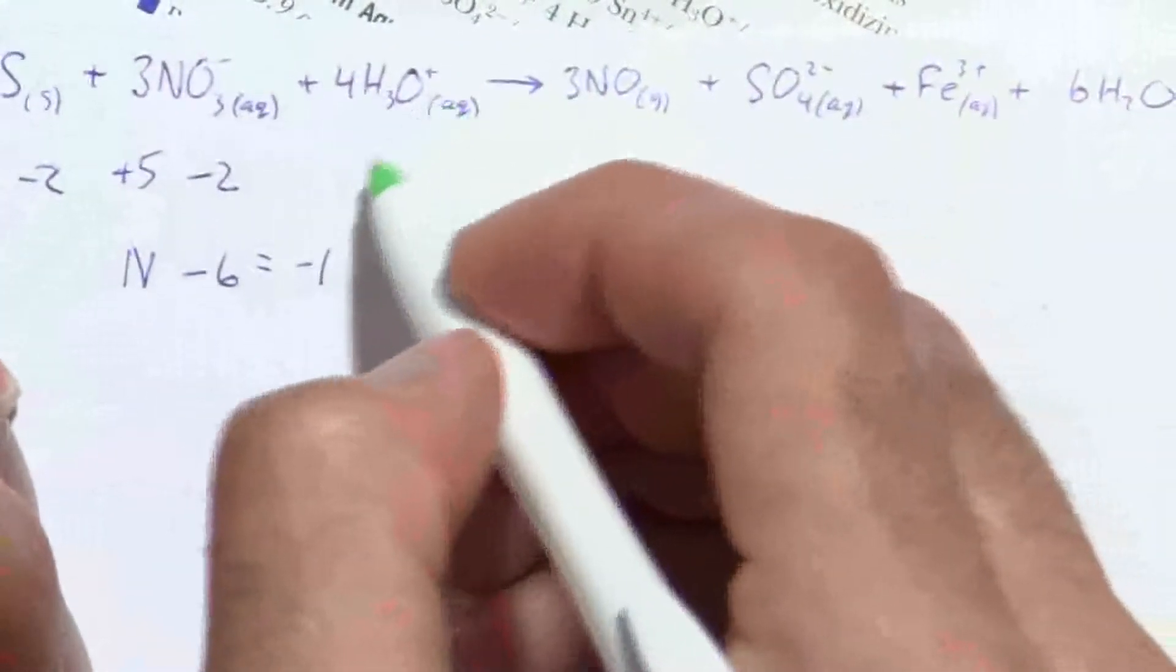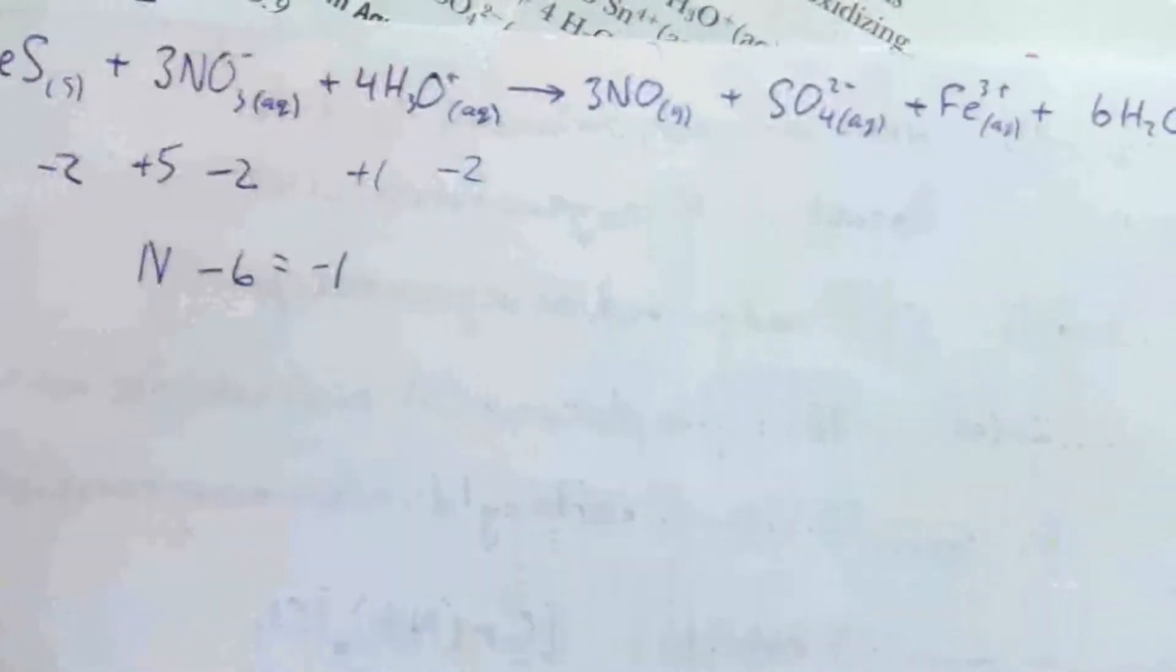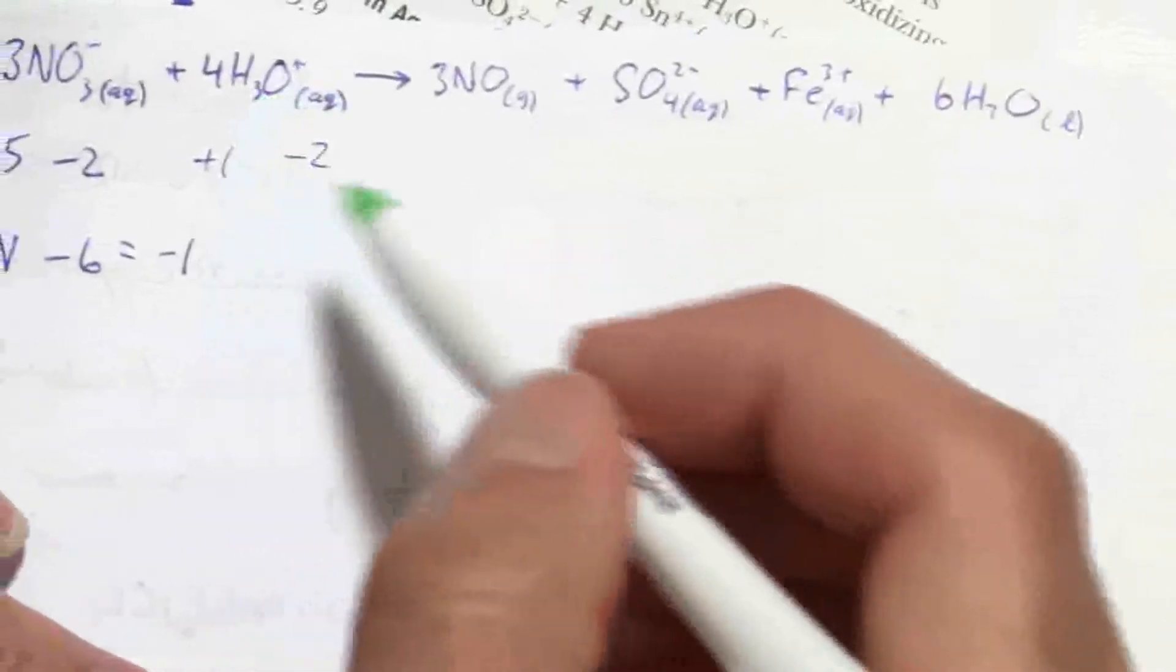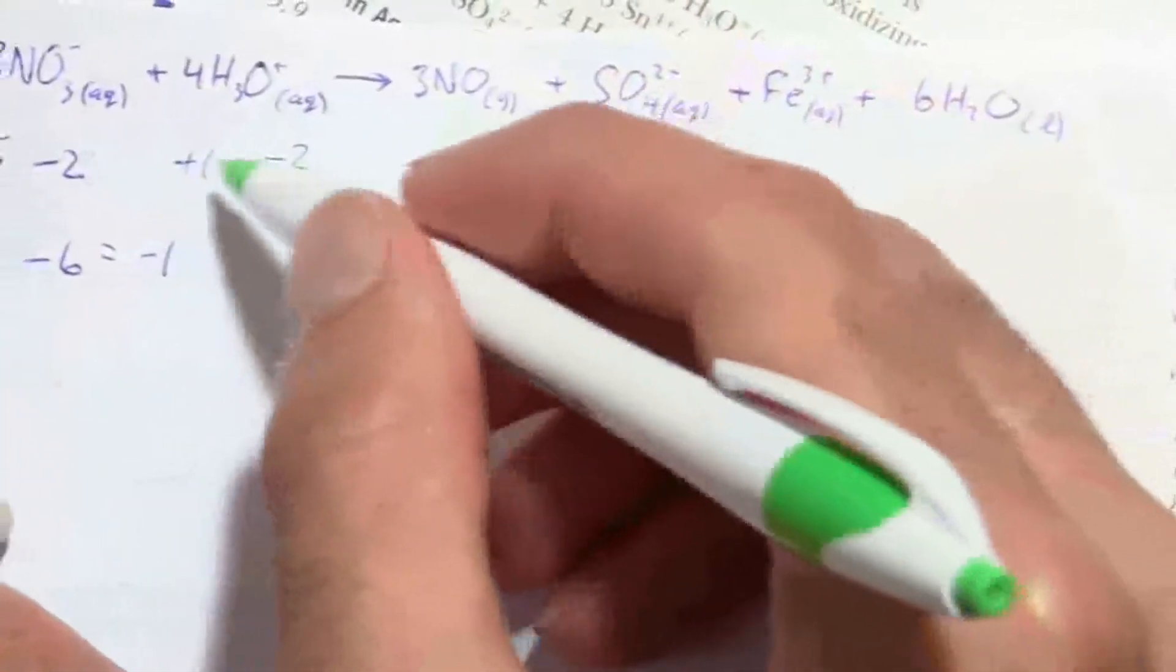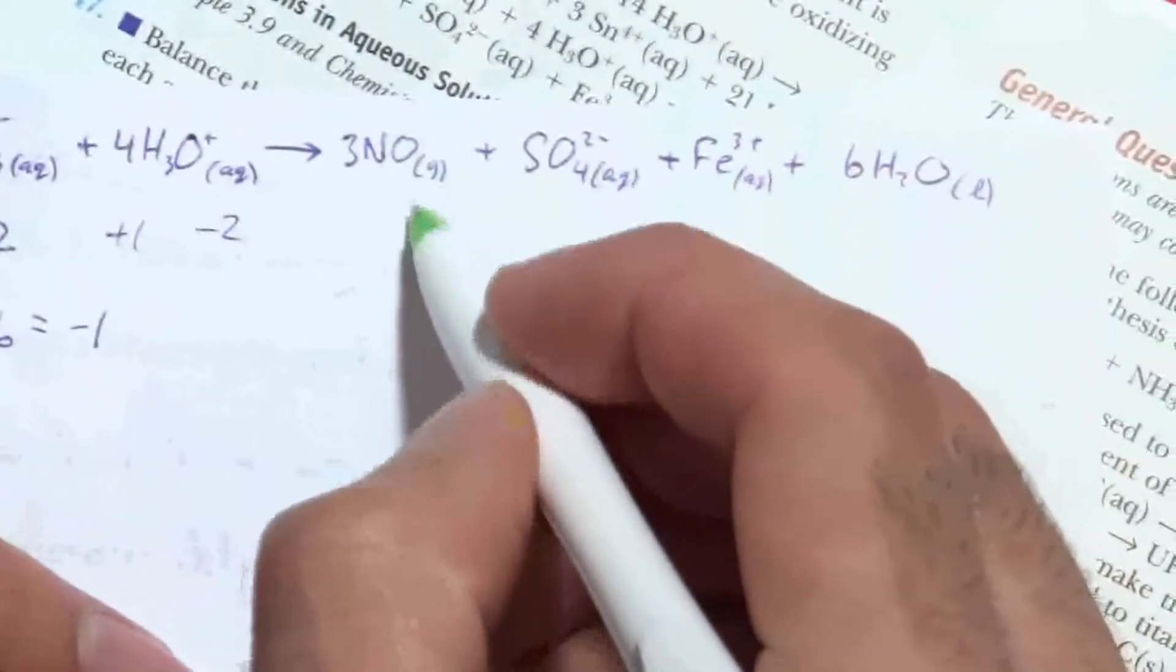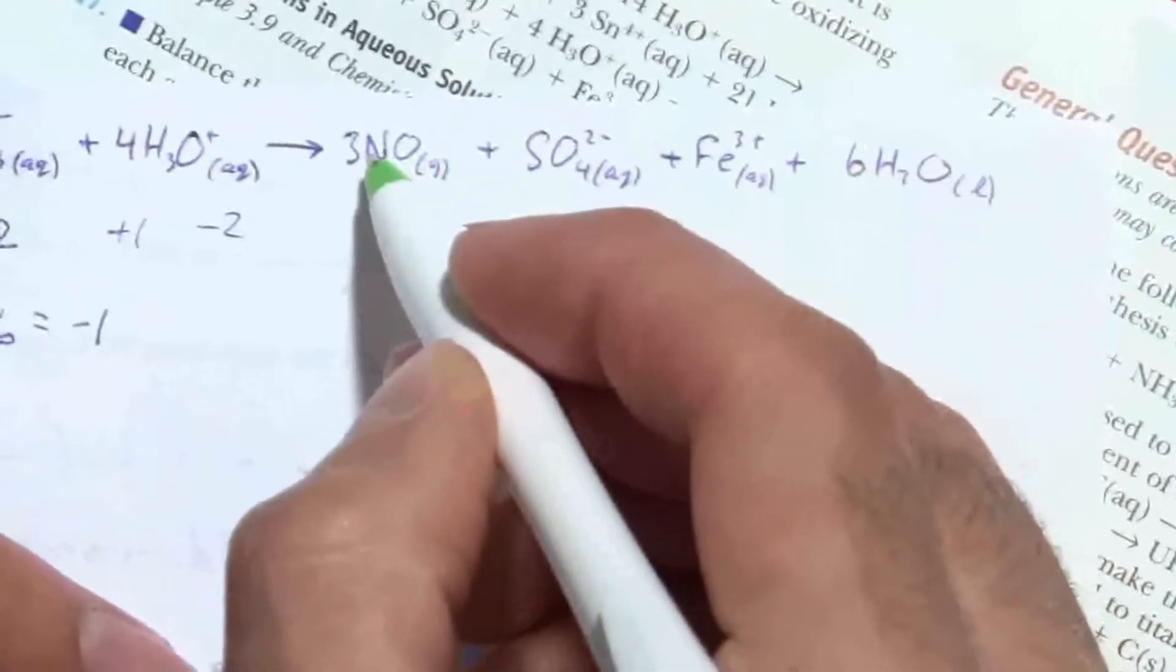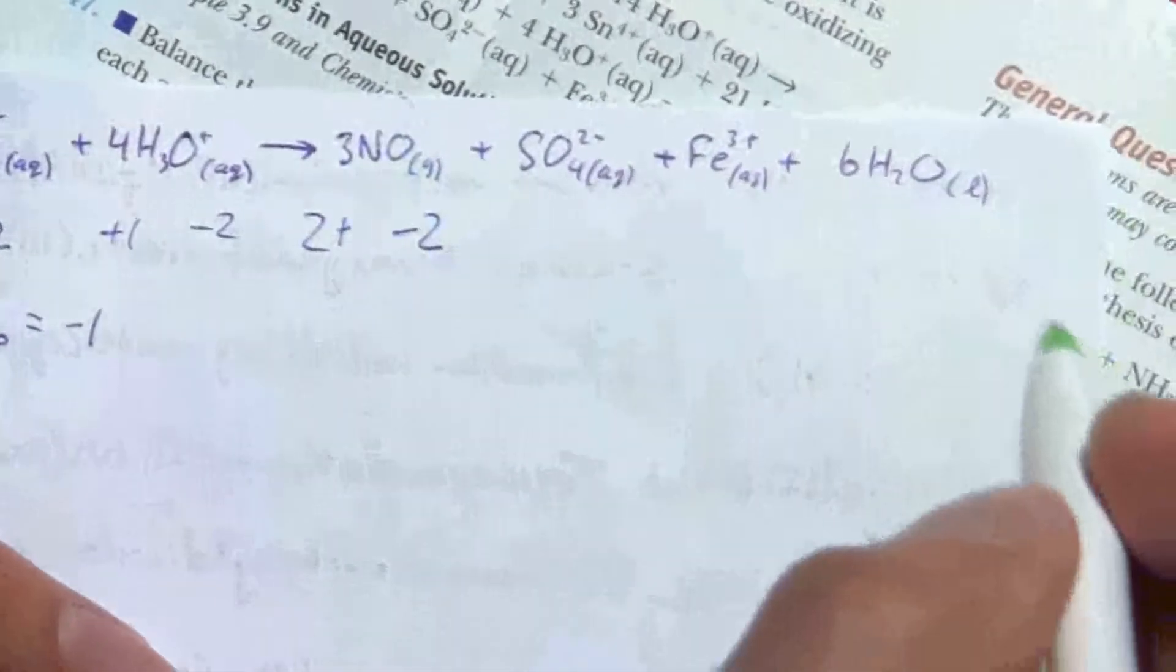Hydrogen and oxygen plus one minus two, those ones are given. And they're also, when in compounds, they're rarely ever oxidized or reduced. Here I have nitrogen monoxide. Again, talking about the oxidation numbers, the oxygen is negative two. The nitrogen then must be positive two to balance that out.